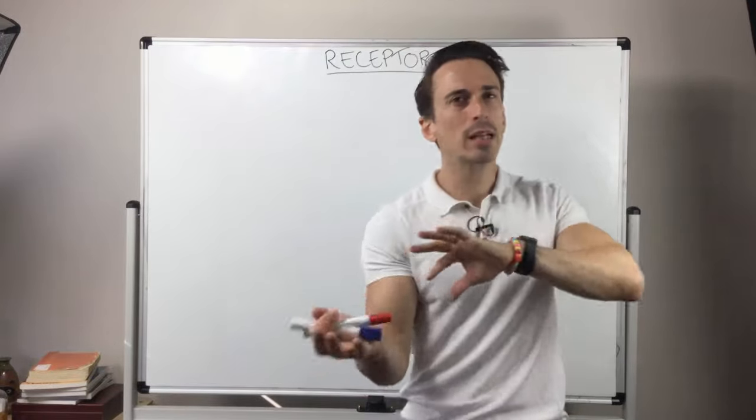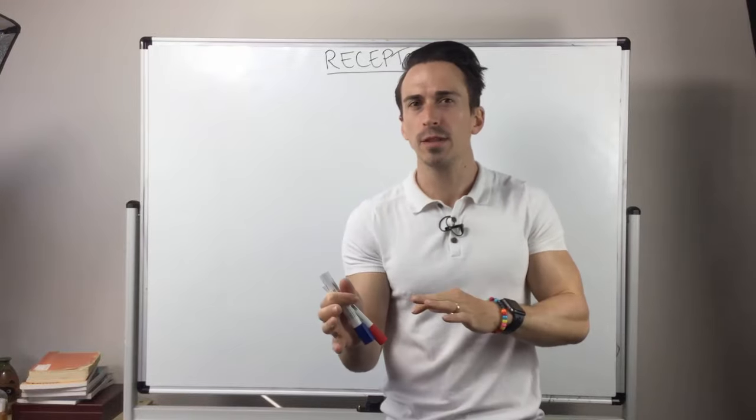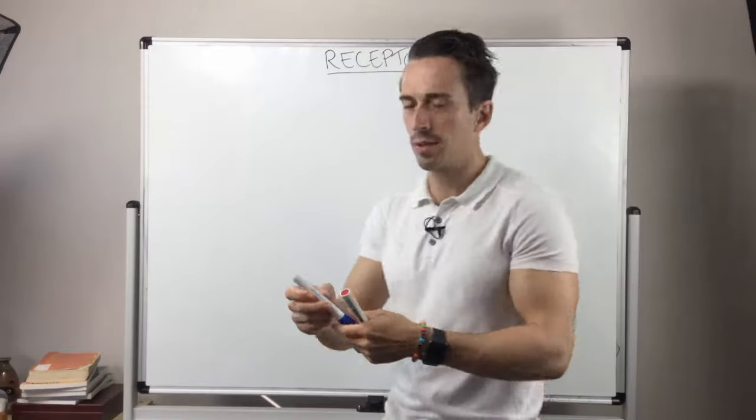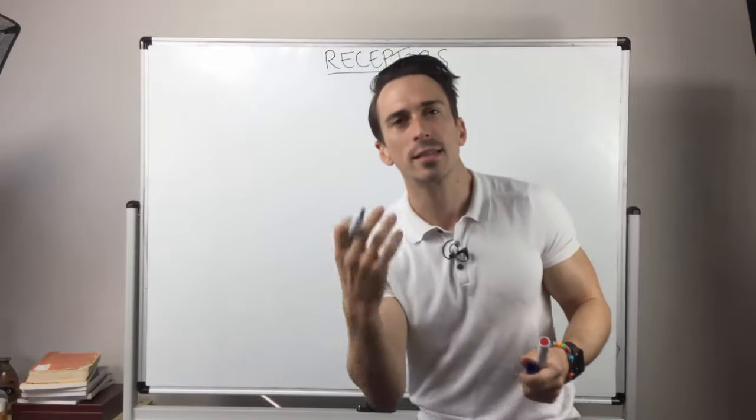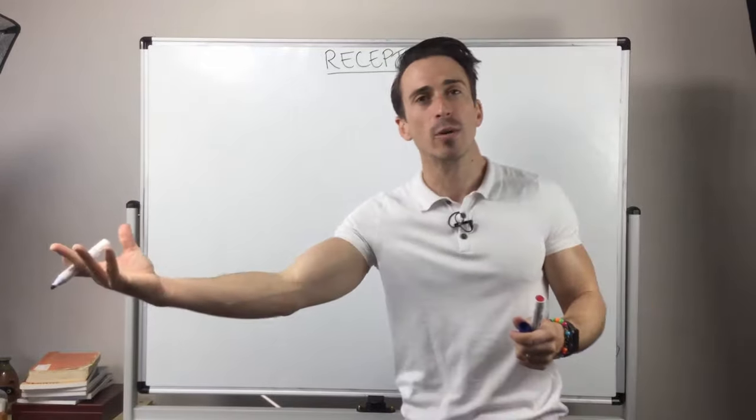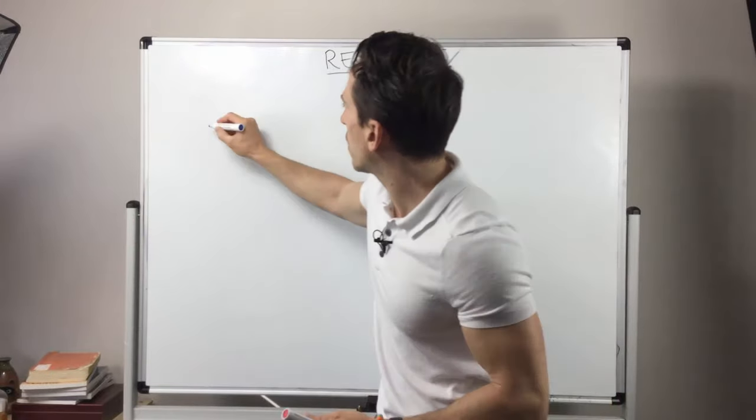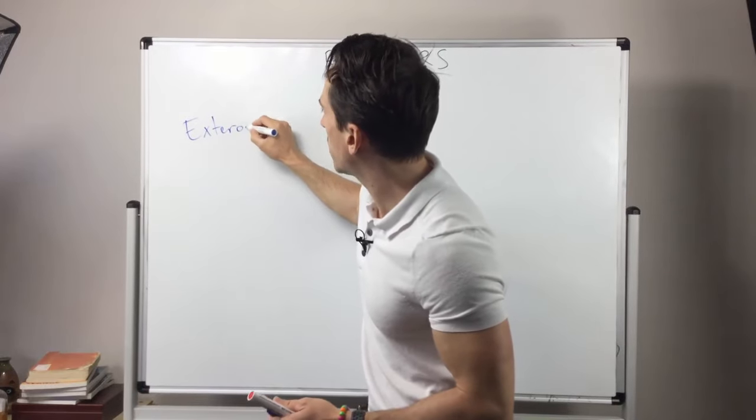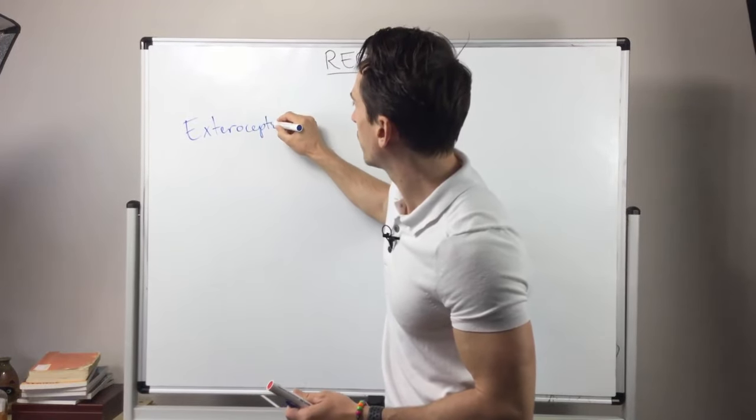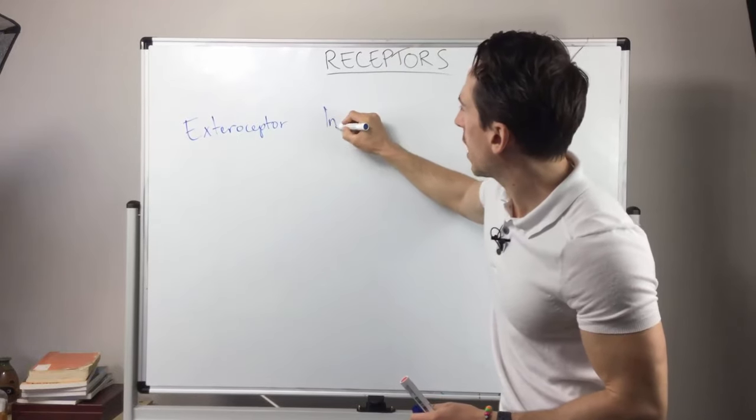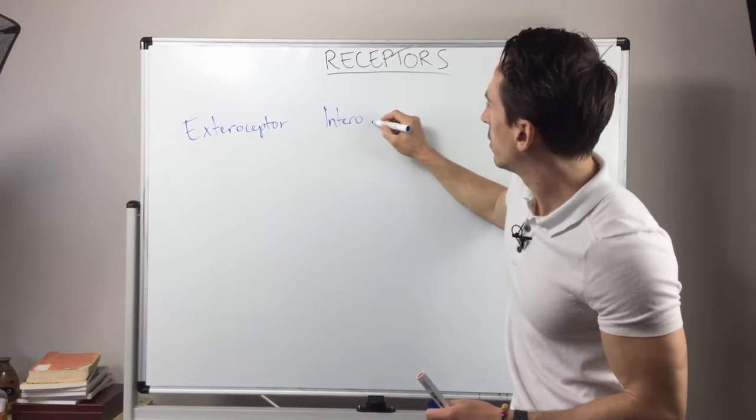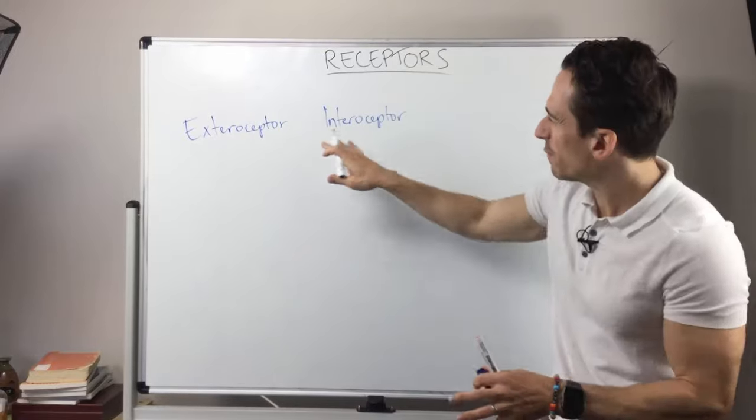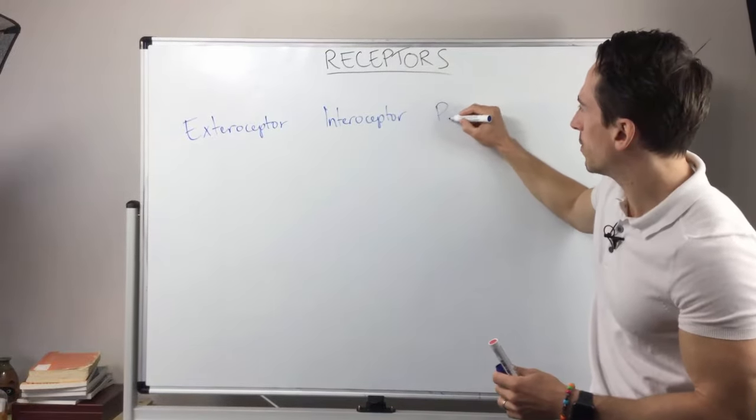Now there's different ways that we can classify sensory receptors. I'm going to show you two classification types. The first type of classification method is whether the sensation that it picks up is from outside the body or inside the body. If it's outside the body we can term it an exteroceptor. If it's inside we can call it an interoceptor. And then there's another one that we use that doesn't fit either of these that we call proprioceptor.